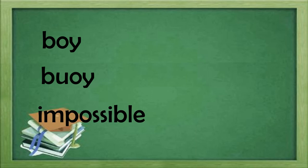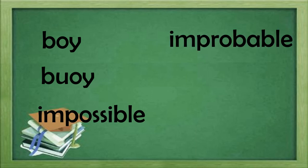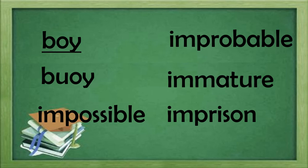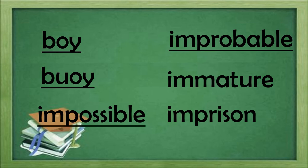Boy, impossible, improbable, immature, imprison. I'll read it again. Boy, impossible, improbable, immature, imprison. It's your turn, children. Read it by yourself.